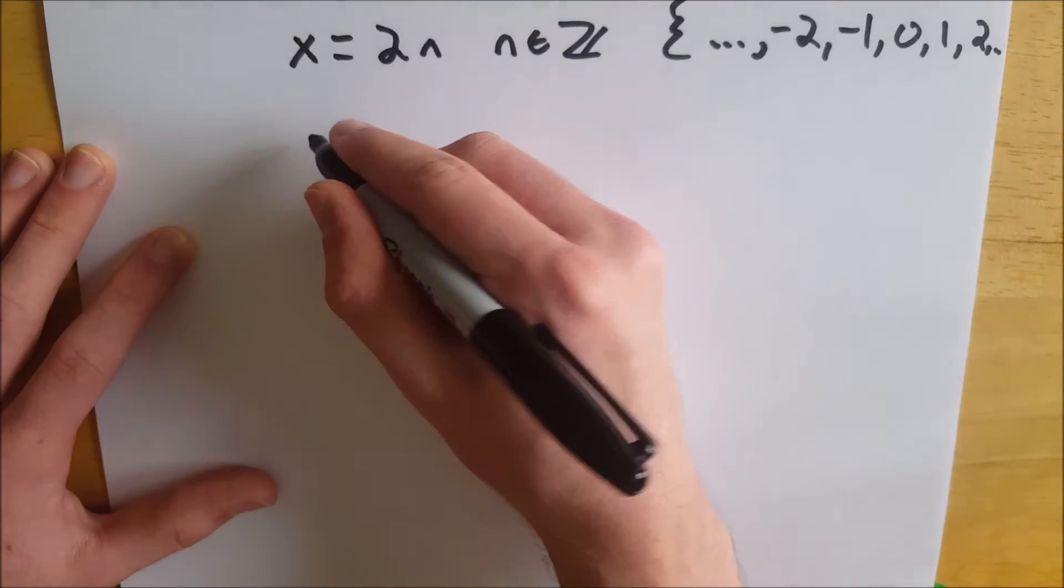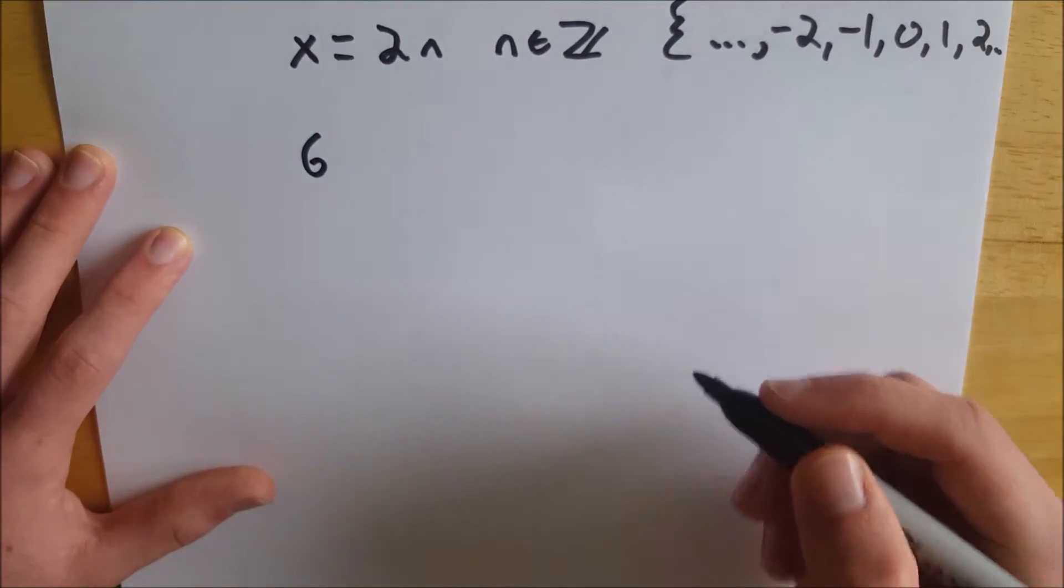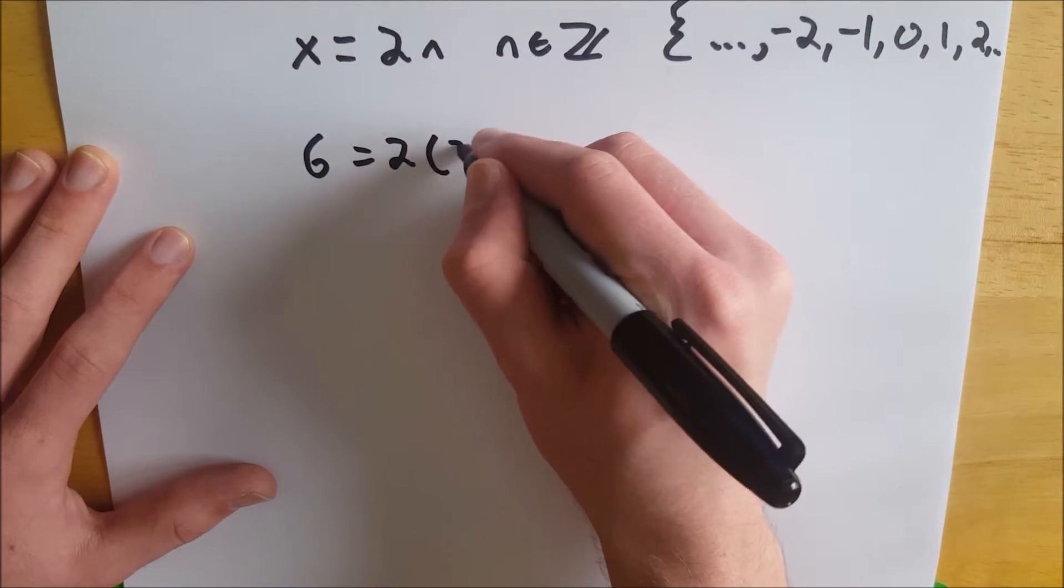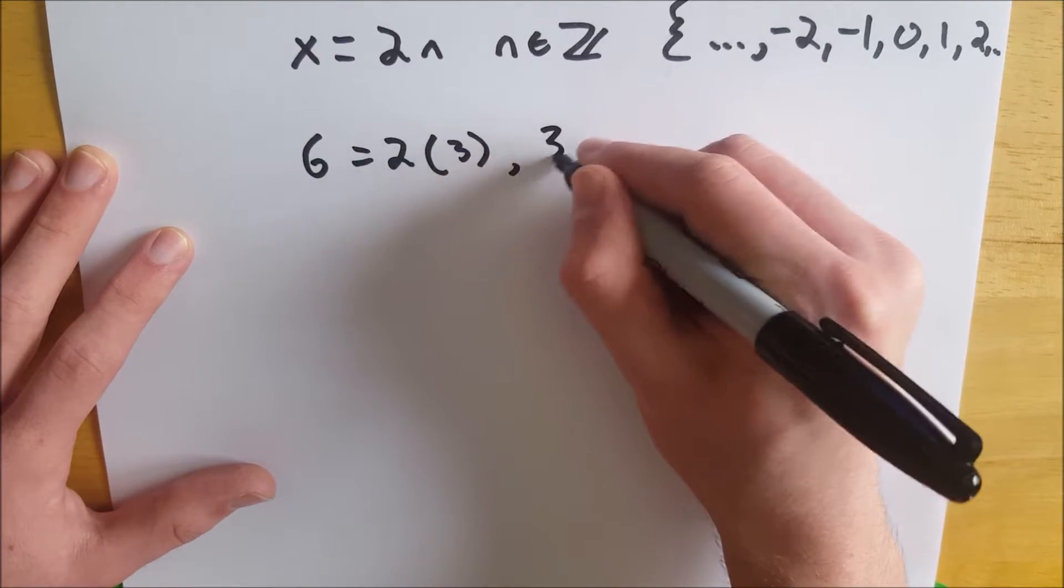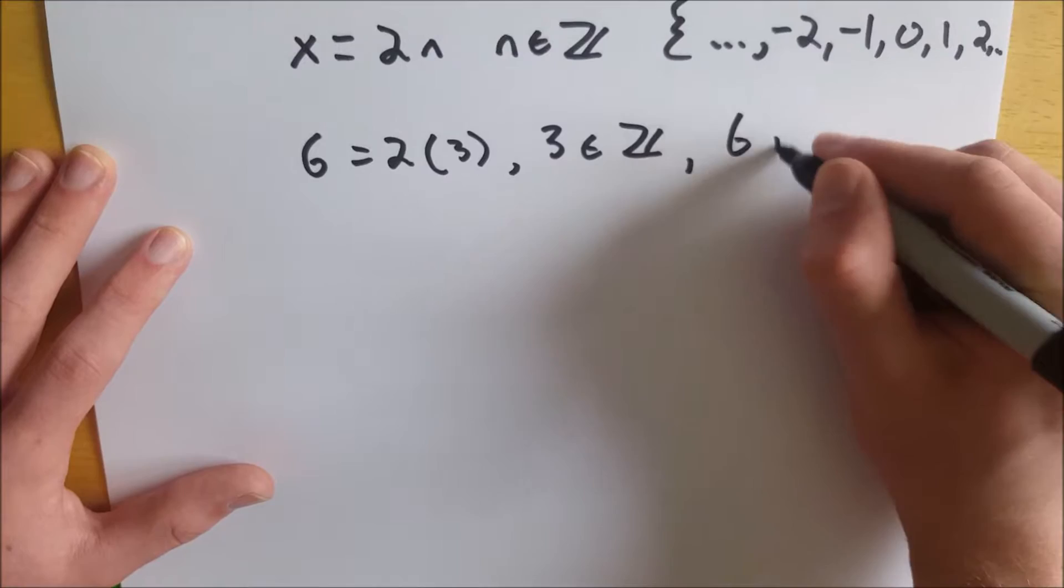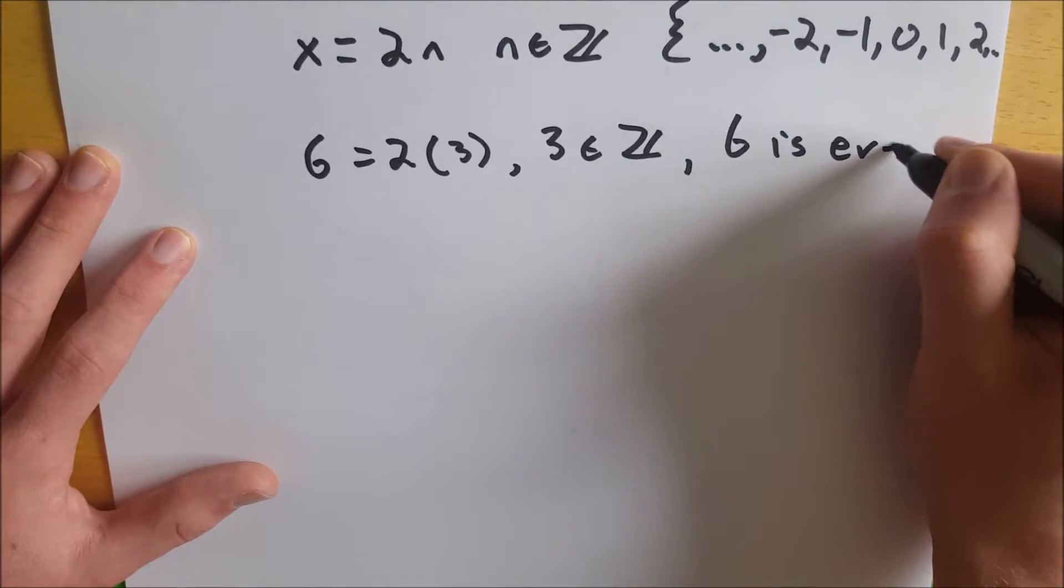So for example, if we wanted to prove that 6 was even, all we would have to do is say: notice that 6 equals 2 times 3. 3 is an element of the integers, and therefore, 6 is indeed even. Super easy.